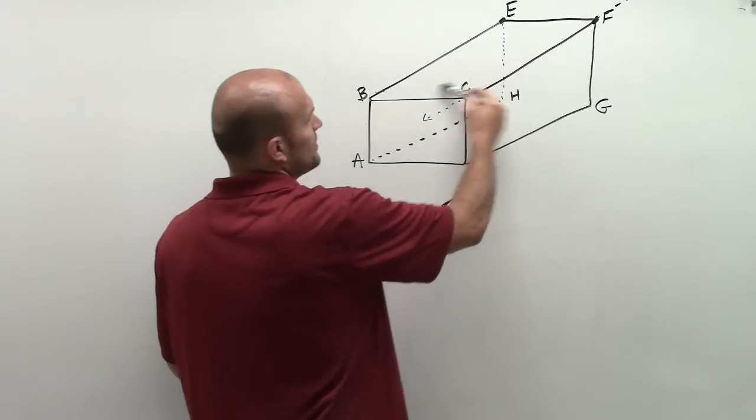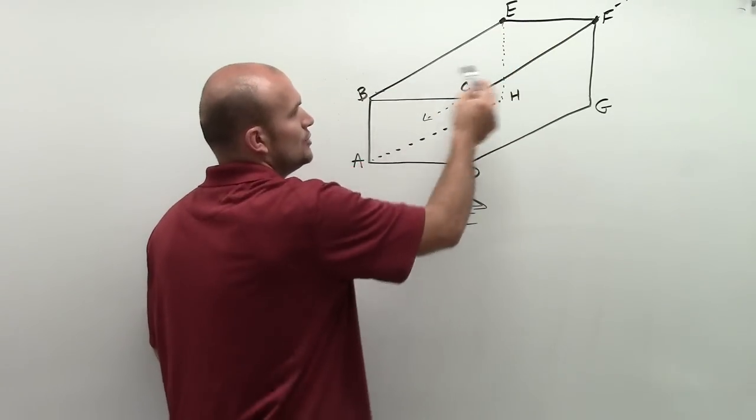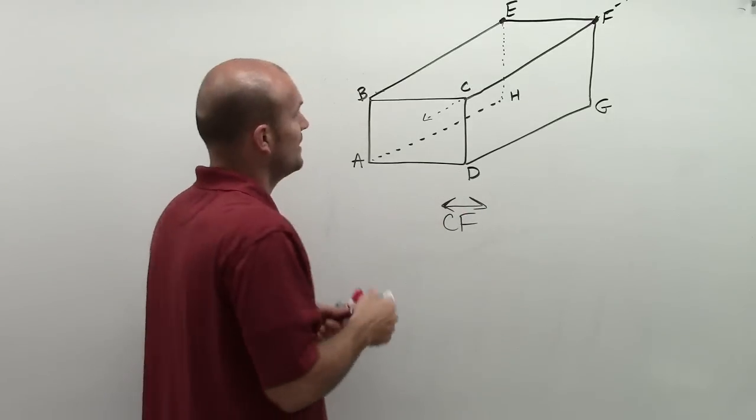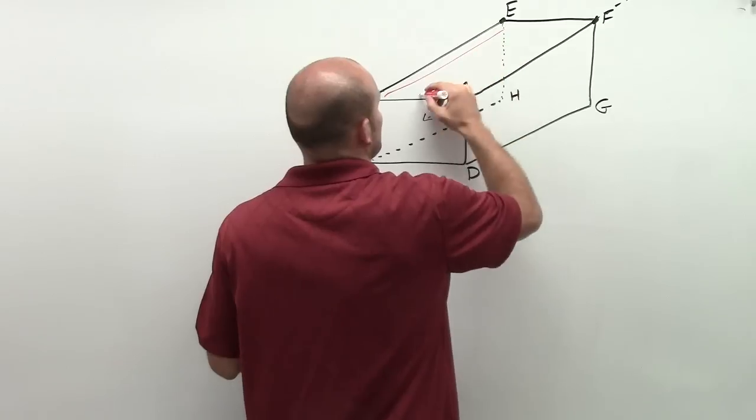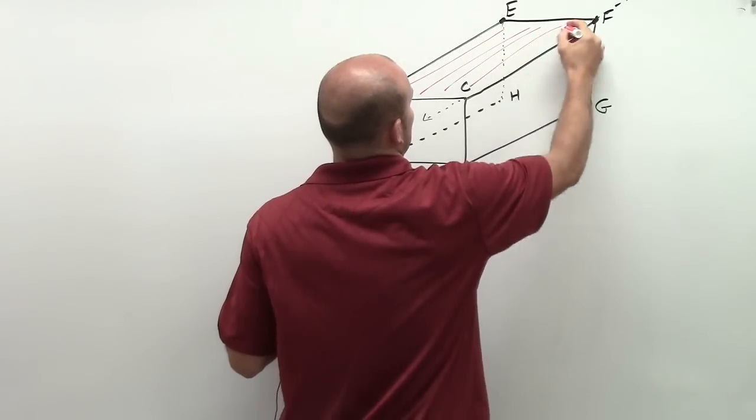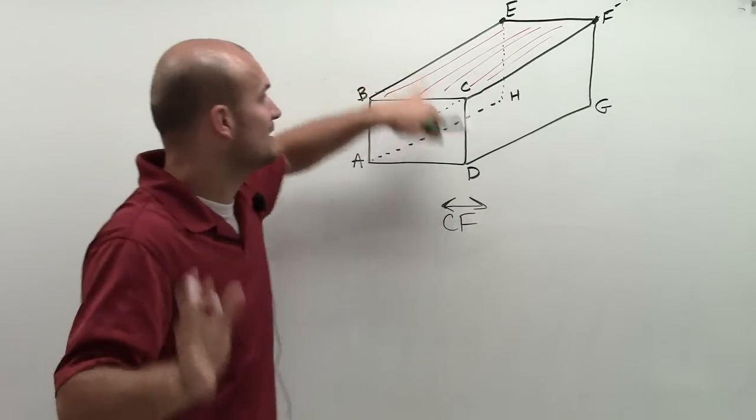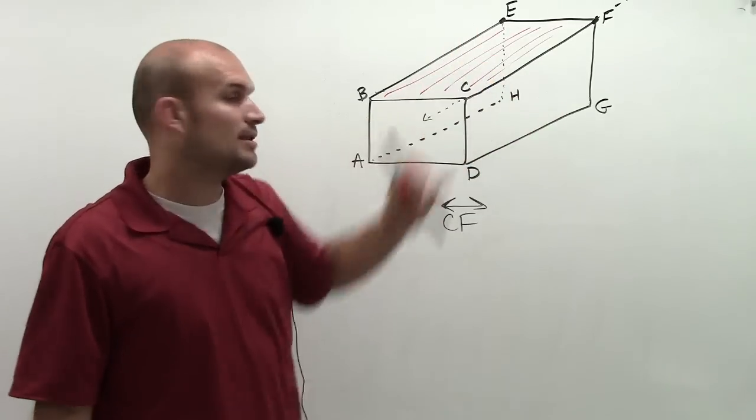However, if I look at this plane up top here, the plane CFE or CFB, you notice that this line is actually a part of the plane. And so I'm going to shade that in. That's telling me that's a plane that even if I extended it infinitely, CF is still going to be a part of the plane.